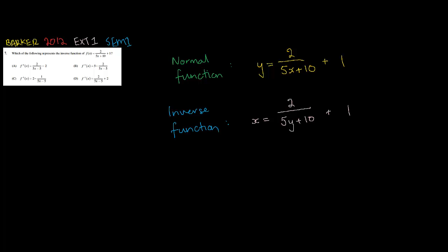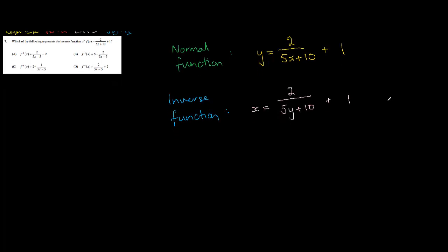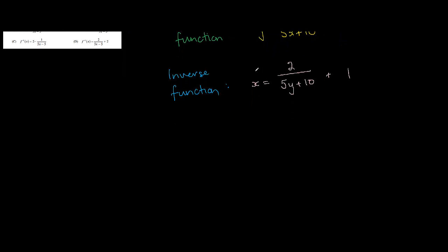And what this question will boil down to is just a bit of algebra, and we're going to try and solve for y. So make y the subject and then that will be the function of the inverse function to this normal one up here. So what I'm going to do is, I'm going to first minus 1 to both sides because we're trying to find y. So we're going to get x minus 1 equals, so that will get 2 over 5y plus 10.